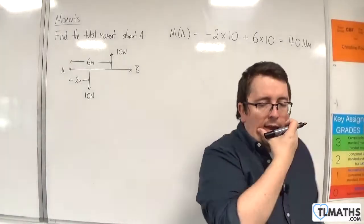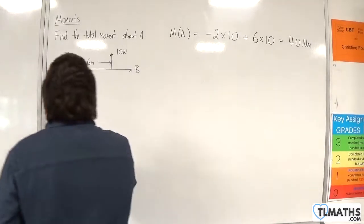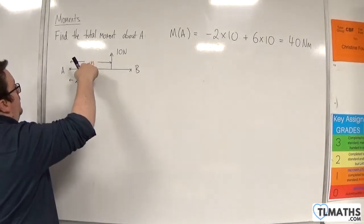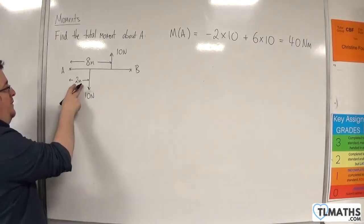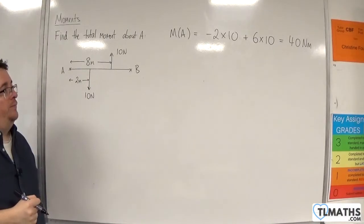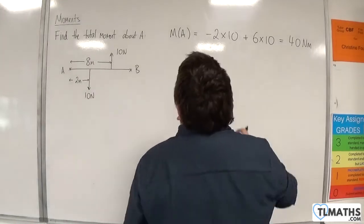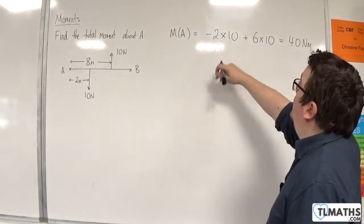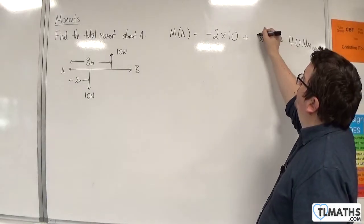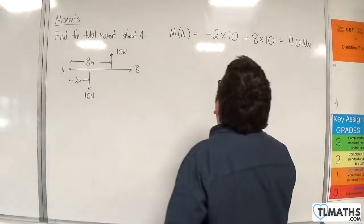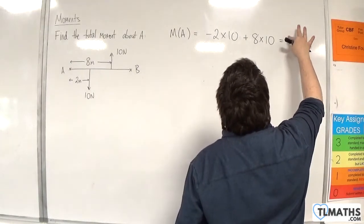I'm going to change the problem slightly, and I'm going to change this to 8 metres. So we've got the 2 metres there, but that's now 8 metres. Now, how does this change taking moments about A? Well, the minus 2 times 10 will be the same, and the 6 times 10 will now be 8 times 10. So we'll have minus 2 times 10 plus 8 times 10, and that would be 60 Newton metres.